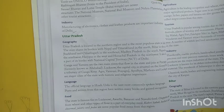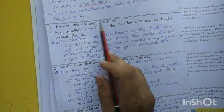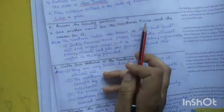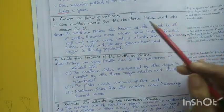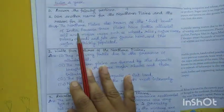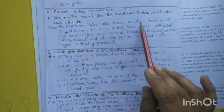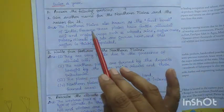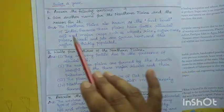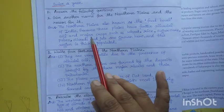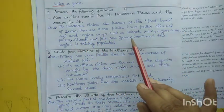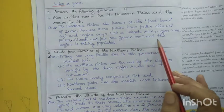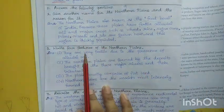Let's start the back exercise. Answer the following question: Give another name for the Northern Plains and the reason for it. The Northern Plains are also known as the 'Food Bowl of India' because these plains have fertile level soil, and major crops such as wheat, rice, sugarcane, pulses, oilseed, and jute are grown here. This is why the region is thickly populated.